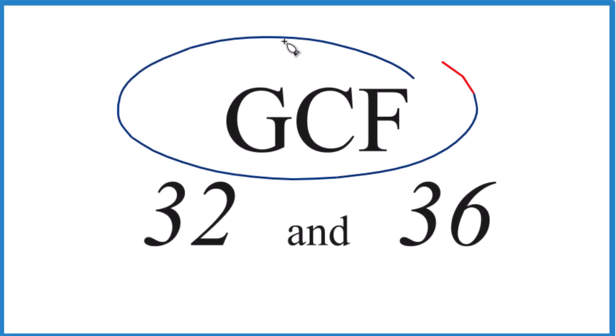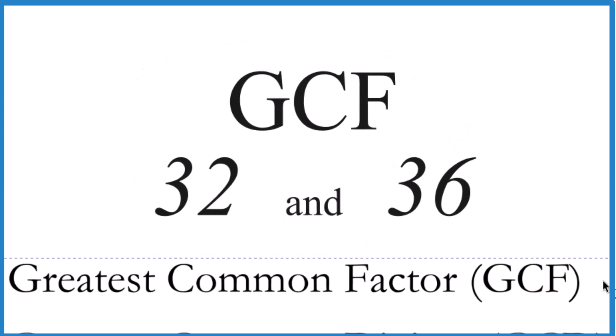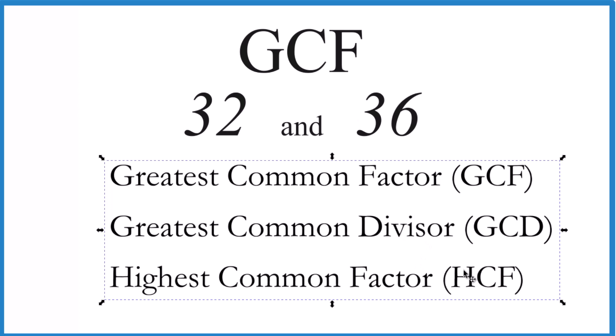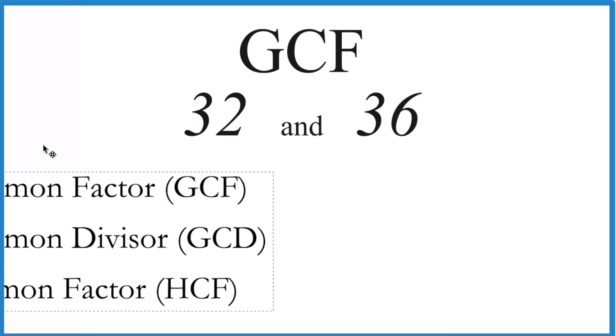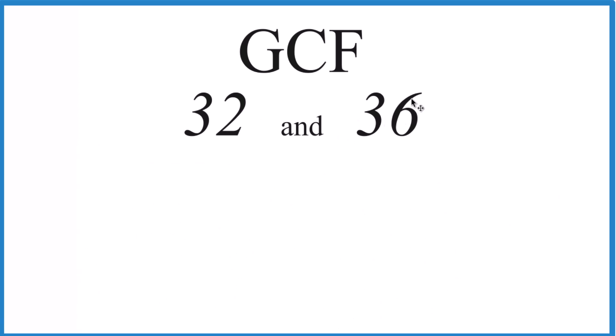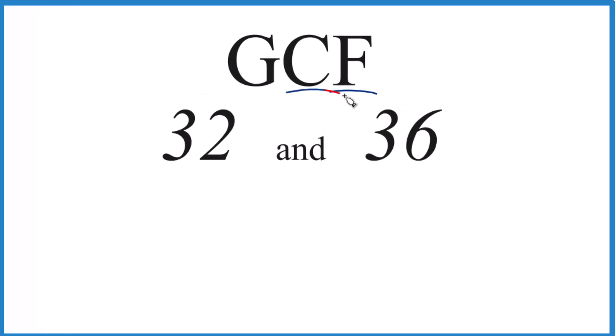Let's find the greatest common factor for 32 and 36. So the greatest common factor, sometimes that's called the greatest common divisor or highest common factor. I like greatest common factor. So what we'll do, we're going to find the factors for 32 and 36, look at the common ones and just choose the greatest.